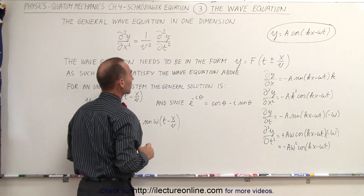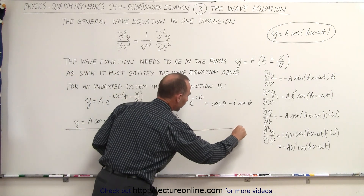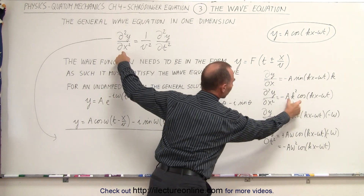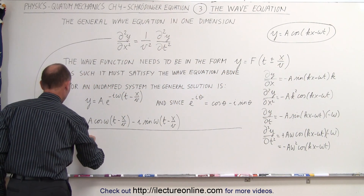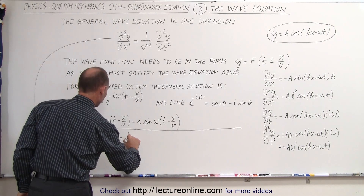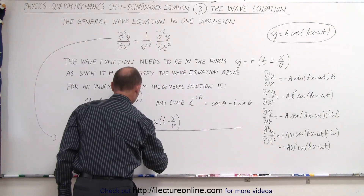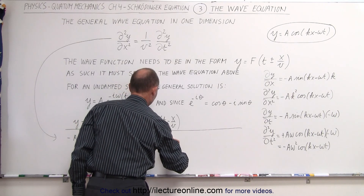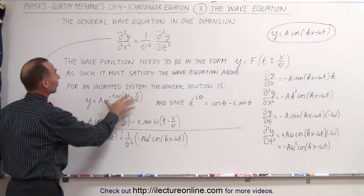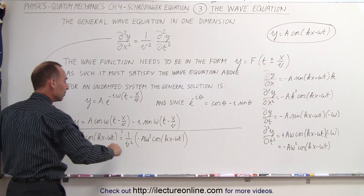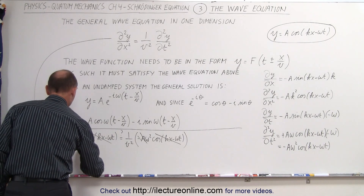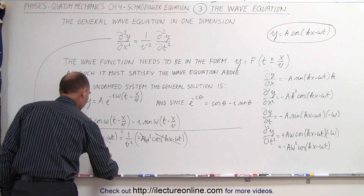If we plug these results into the general wave equation, on the left side we get minus A·k² times the cosine of kx minus omega t, and that should equal one over the velocity squared times minus A·omega² times the cosine of kx minus omega t. The cosine terms cancel on both sides, as do A and the minus signs. Simplifying, we get that k² equals one over v² times omega².